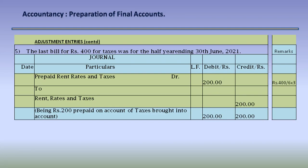Adjustment entry 5: the last bill of Rs. 400 for taxes was for the half-year ending 30th June 2021. We pass: Prepaid Rent and Taxes Dr. 200 to Rent, Rates and Taxes 200. Being Rs. 200 prepaid on rent, rates and taxes. The total bill is Rs. 400 for half a year; divided over the period, Rs. 200 relates to the quarter falling after 31st March 2021, so that amount is prepaid.